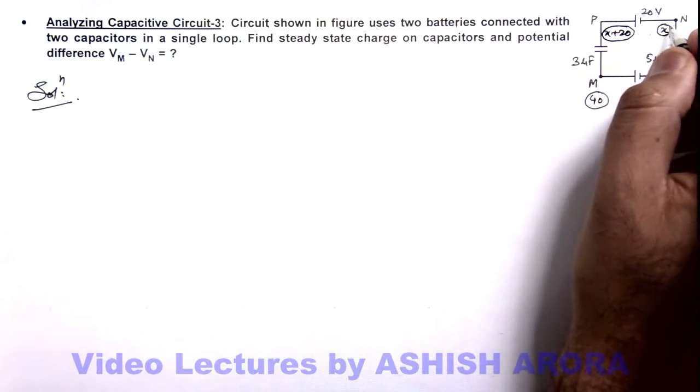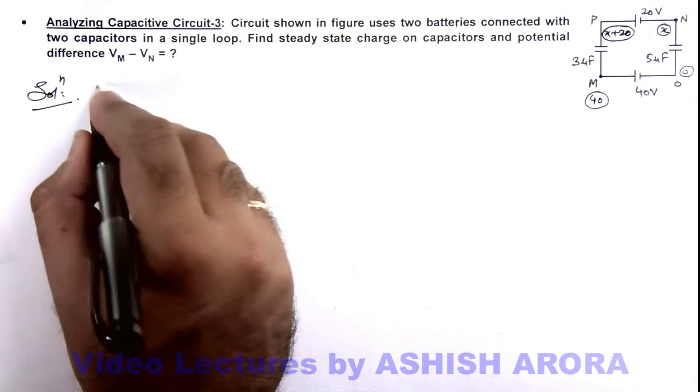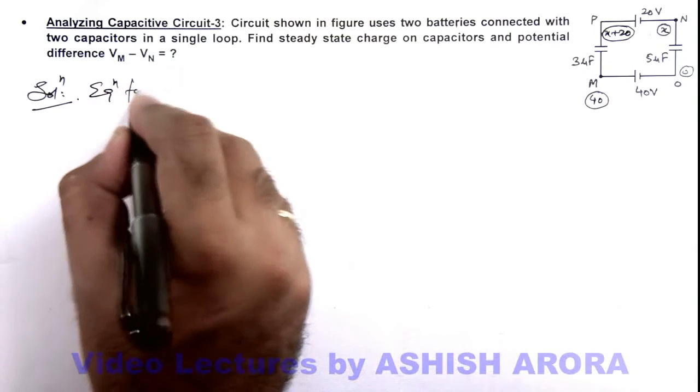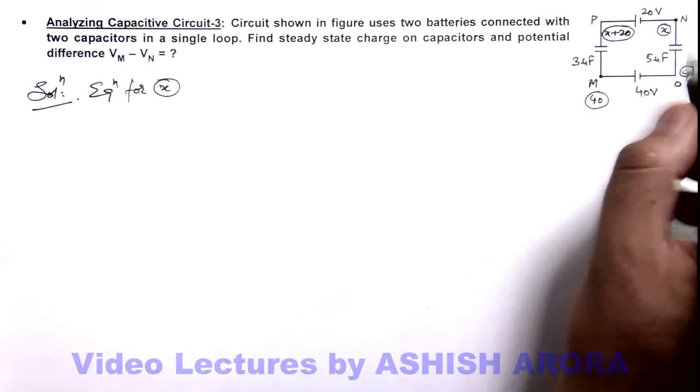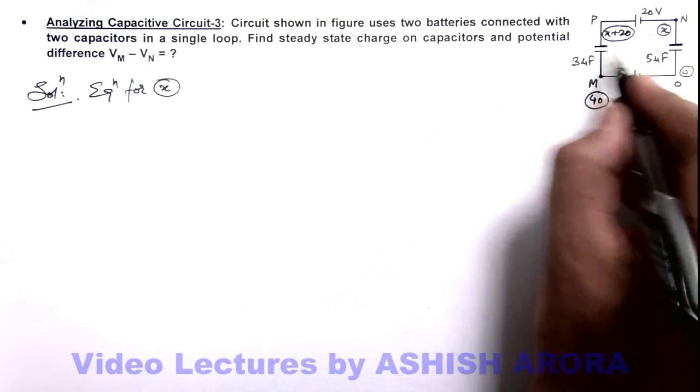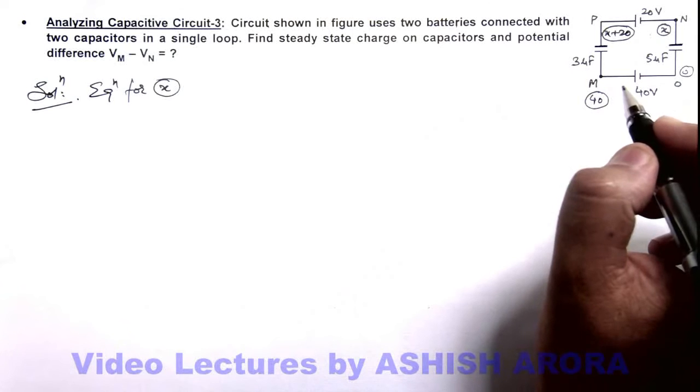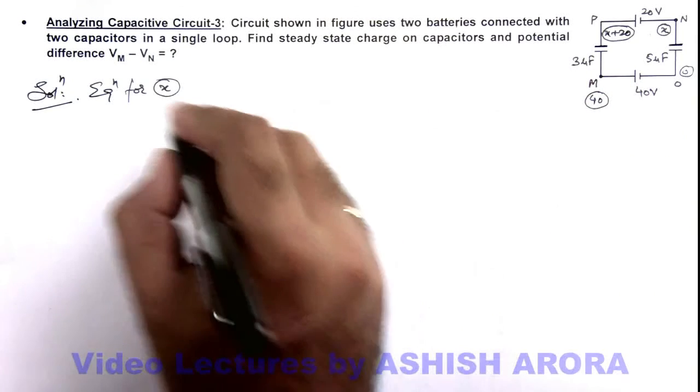For this potential x we can write the equation. There are two capacitor plates connected with terminal of potential x, so we can write down its equation as the charges on these two plates to be zero.